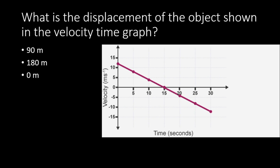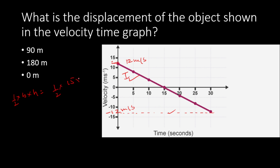Next question: what is the displacement of the object shown in the velocity-time graph? Here the graph is both above and below the time axis. We follow the same method — calculate area under the graph. For the first section (above axis): area = ½ × 15 × 12 = 90 metres.